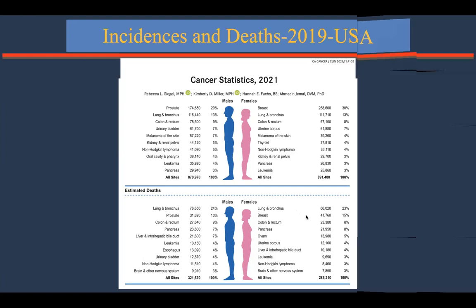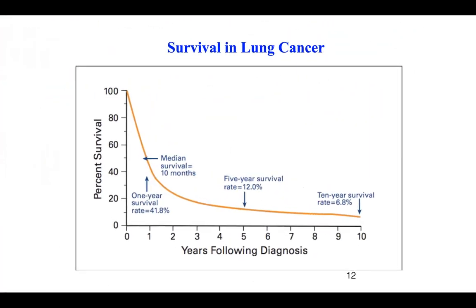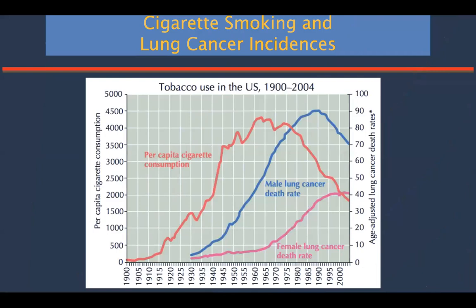The mortality of lung cancer is so high. Looking at the survival curve of mammary carcinoma, approximately 61 out of 100 patients can survive beyond 10 years. But for lung cancer, the 10-year survival rate is only about 7% — this figure is for all stages. Survival rates are a little better for operable patients, but overall survival is very dismal in lung cancer.